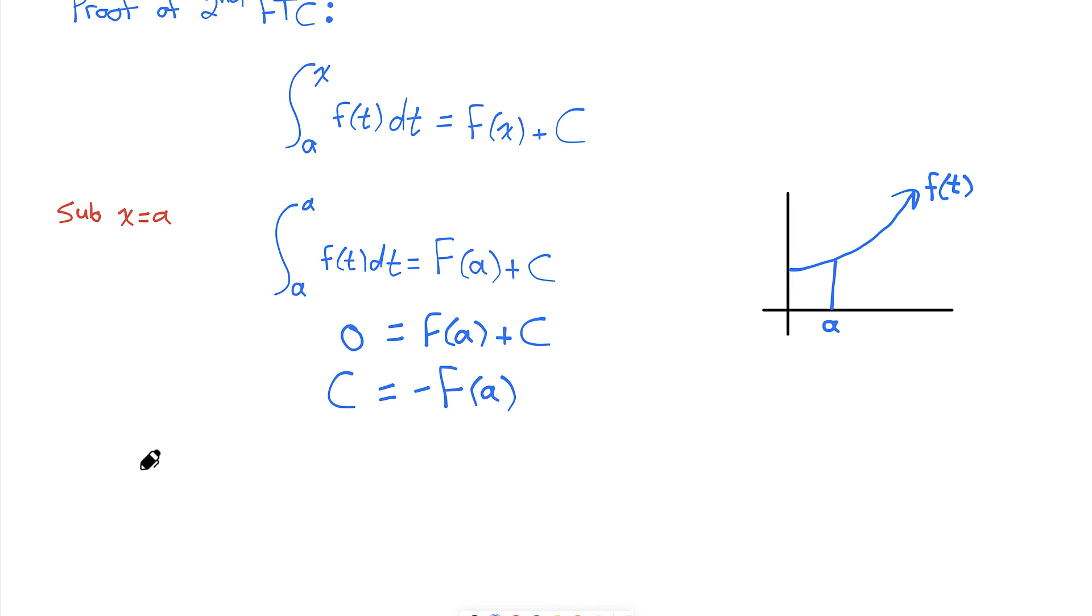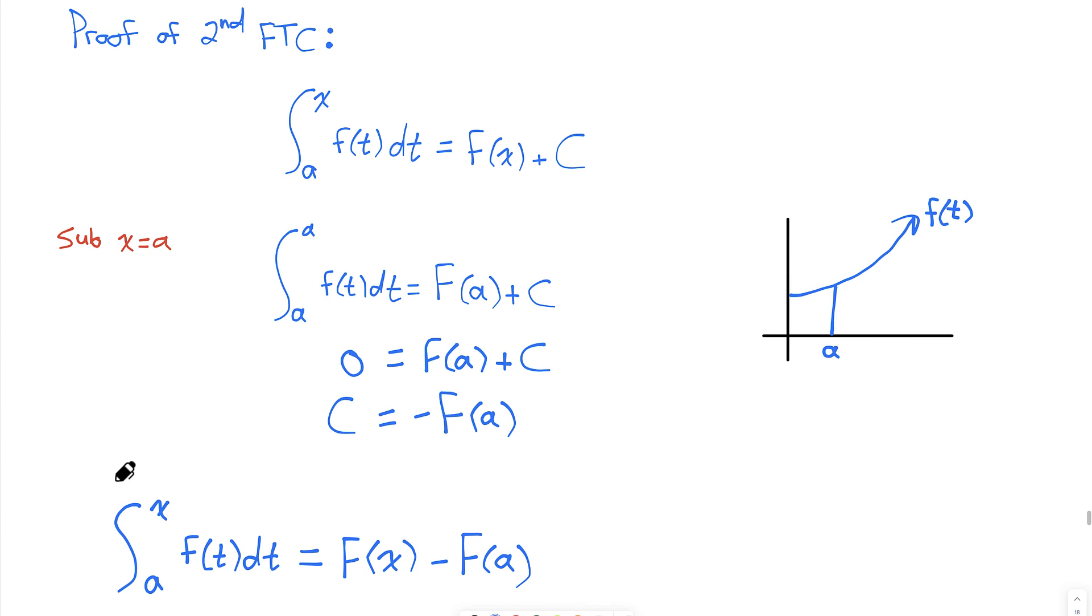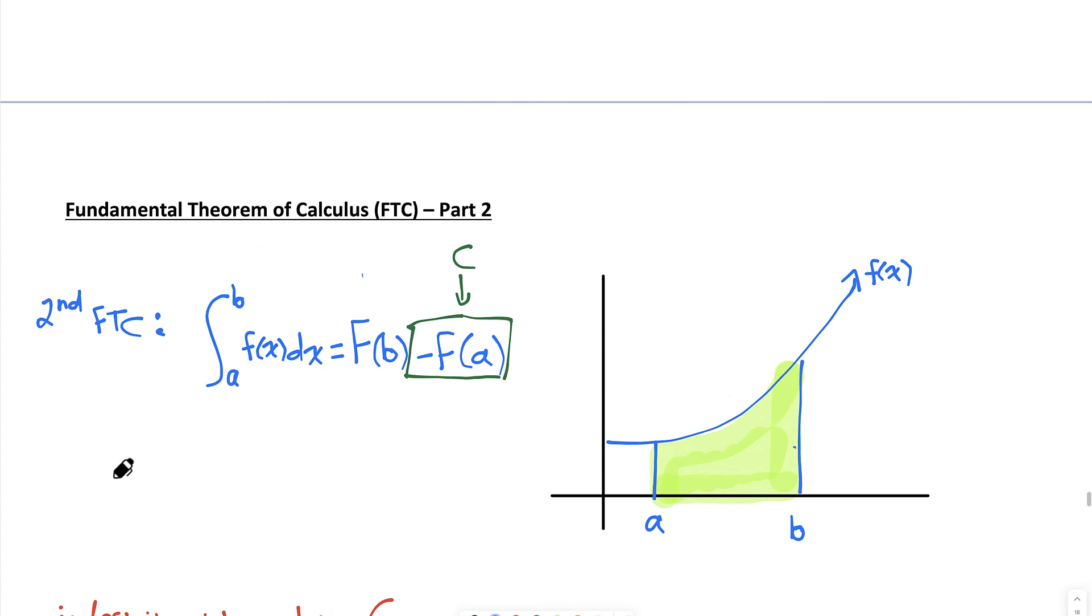So this tells me, let me rewrite my original statement up at the top of my proof. The integral from a to x of f(t) dt is equal to capital F(x) plus c, but I'm not going to write plus c this time, because I know c is equal to negative capital F(a). So I can replace that constant of integration with negative capital F(a). And that looks just like the theorem I said I was going to prove to you at the very beginning here.